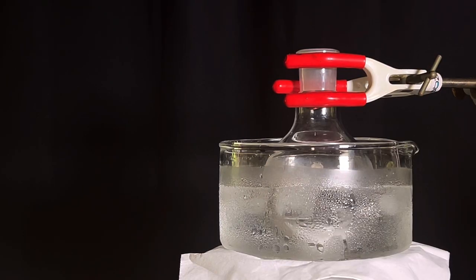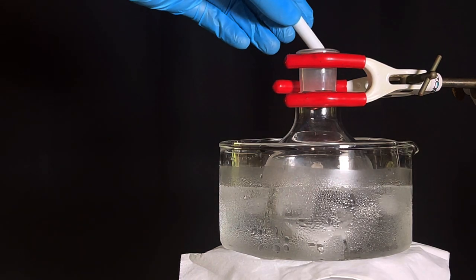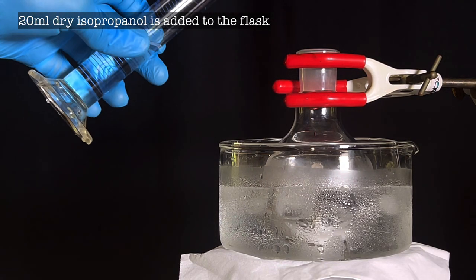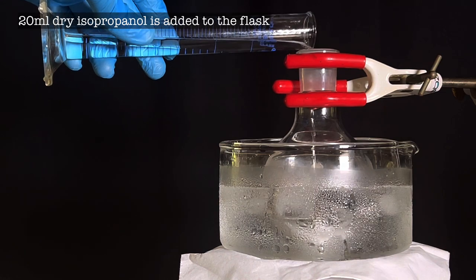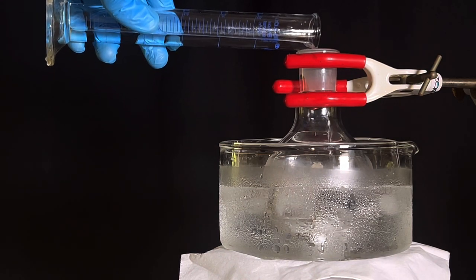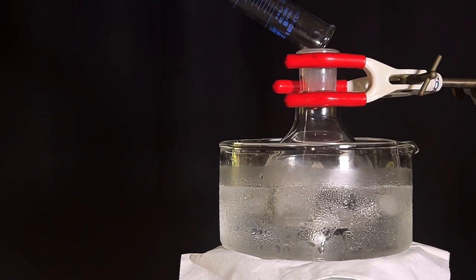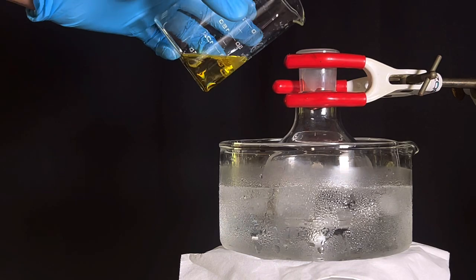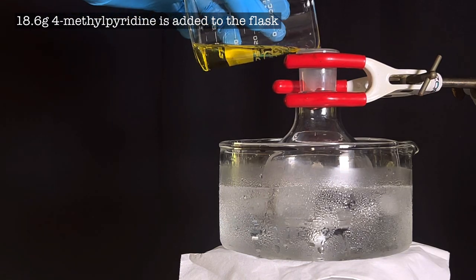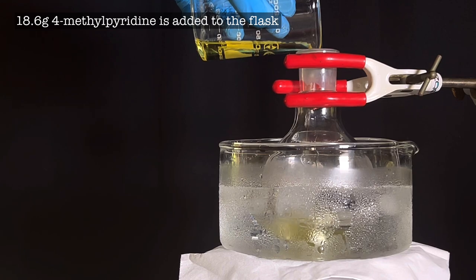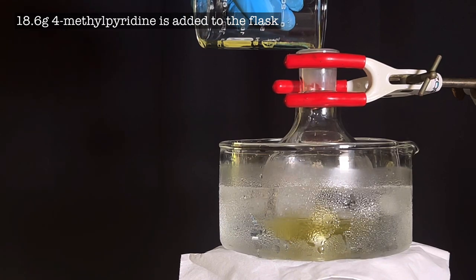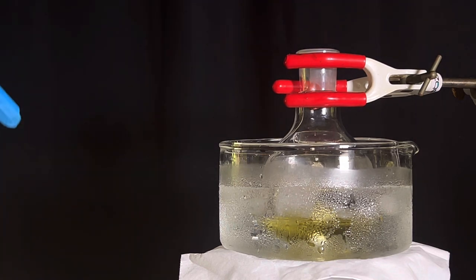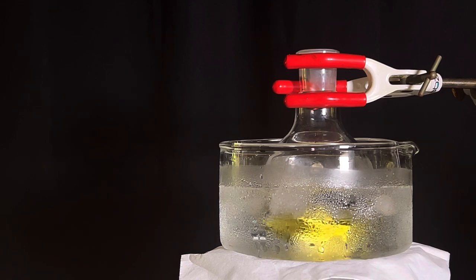Start by clamping a 100 milliliter round bottom flask in an ice bath. Add a magnetic stirring bar inside. 20 milliliters of dry isopropanol was measured in a graduated cylinder and was transferred to the flask. Magnetic stirring was then turned on.